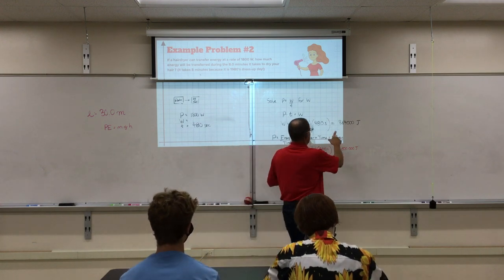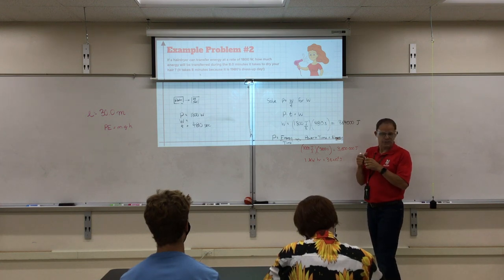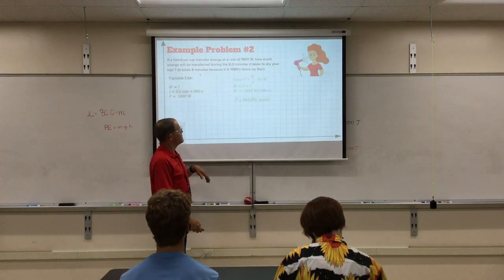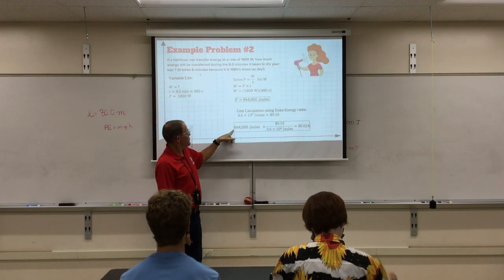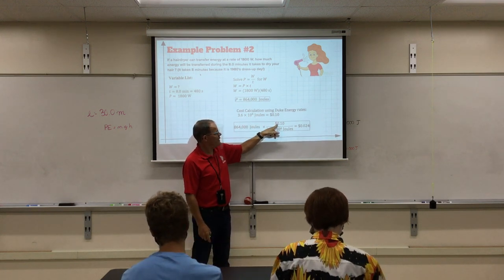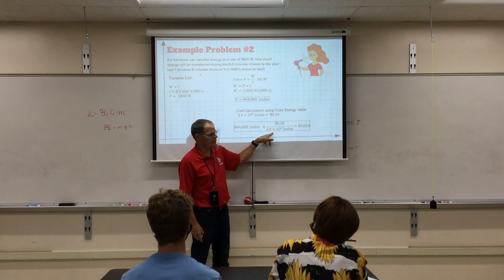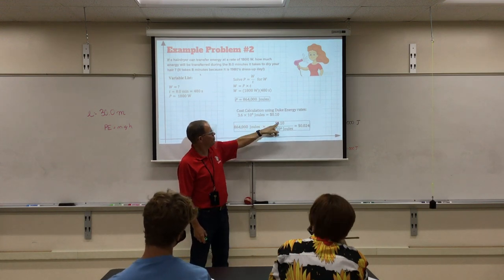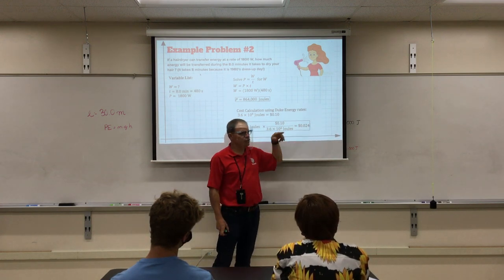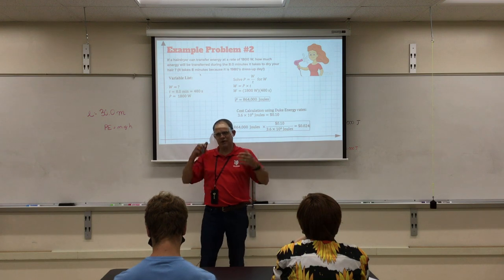So we can convert this answer right here that Josh got into kilowatts, hours, and then into dollars. Okay? So it looks kind of like this. I've got my solution here. There's my variable list there to think. Here's what you did. You take your 864,000 joules, and you multiply it by a conversion factor. 10 cents is equivalent to 3.6 million joules. And since you need joules on the bottom, it goes down here. So if you take the 864,000, multiply it by .1 dollars, divide it by 3.6 times 10 to the 6th, you get .024 dollars, which is 2.5 cents. That's what it costs to run your hair dryer for 8 minutes.